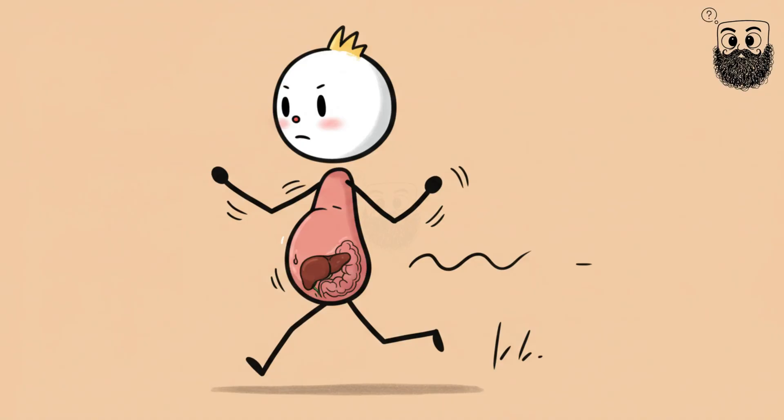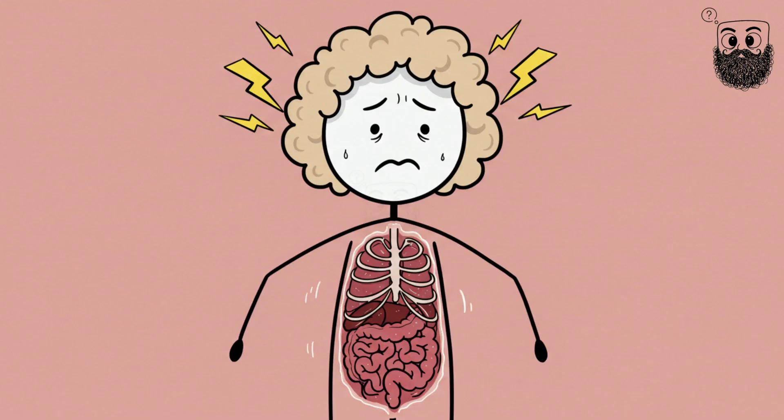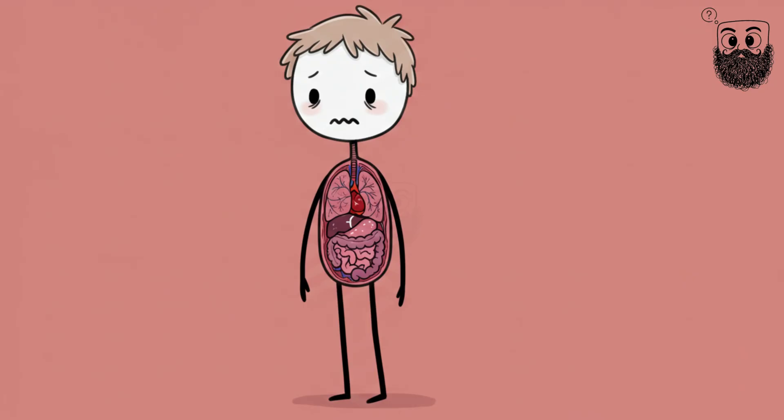Some think it happens when your organs, like your liver and stomach, bounce around and pull on tiny ligaments connected to your diaphragm. These ligaments respond by sending pain signals. Other scientists think your diaphragm cramps up because it's not getting enough blood during exercise. Some experts think your internal organs are just tired of being jostled around.